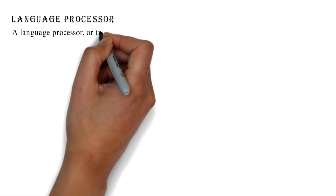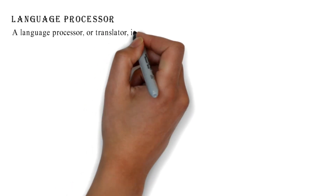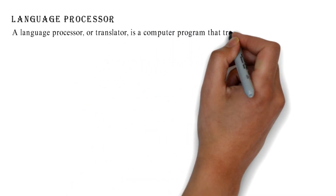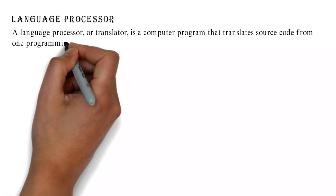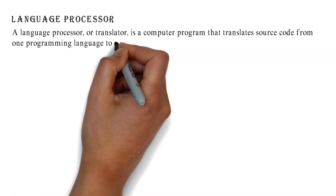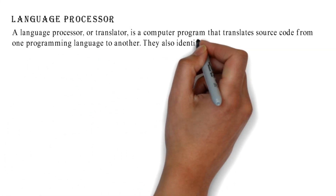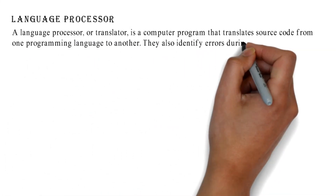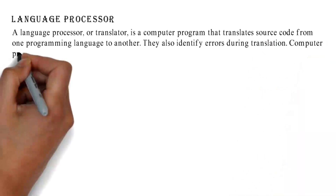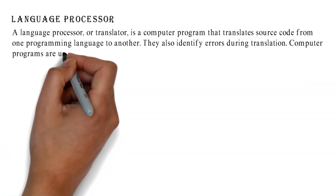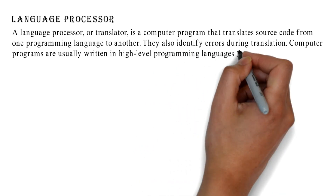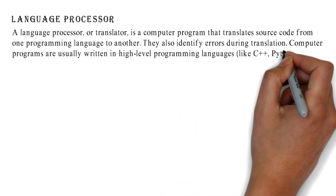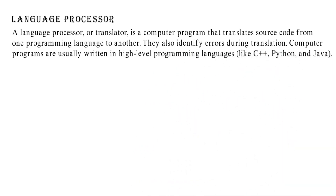A language processor, or translator, is a computer program that translates source code from one programming language to another. They also identify errors during translation. Computer programs are usually written in high-level programming languages like C++, Python, and Java.